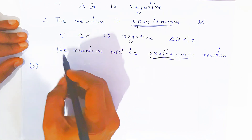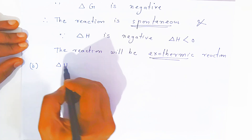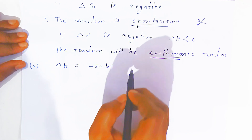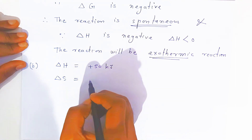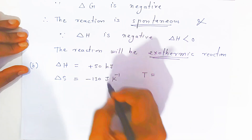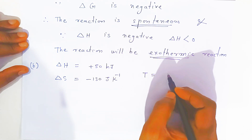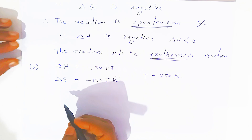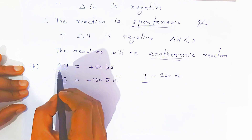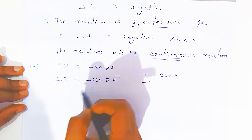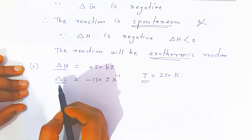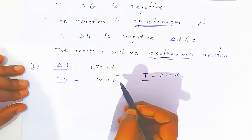Now the second part of the question: here ΔH is given plus 50 kilojoule, and ΔS is given minus 100 joule per kelvin. The reaction is taking place at temperature 250 kelvin. So you have to study, with the help of this data, whether the reaction will be spontaneous or non-spontaneous. By observing the ΔH value, it is positive — so it is an endothermic reaction; we have to give heat from the surrounding to the reaction.